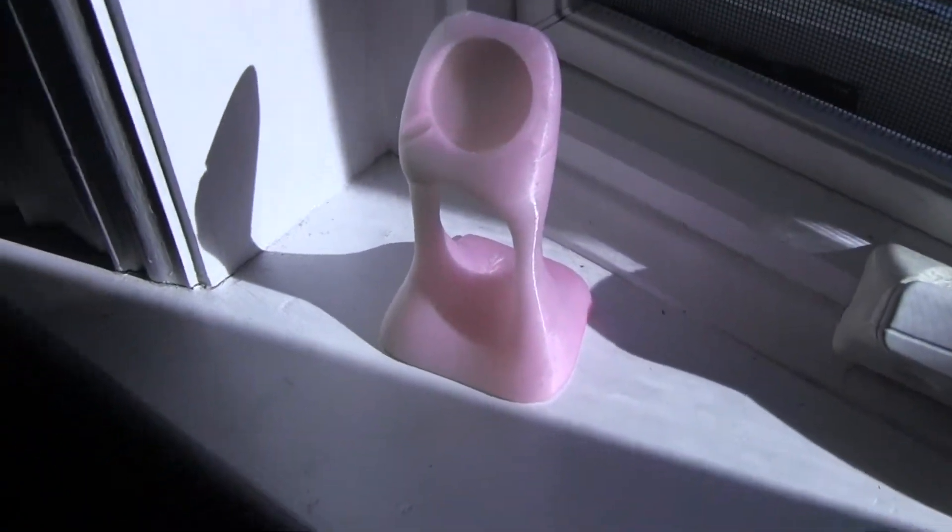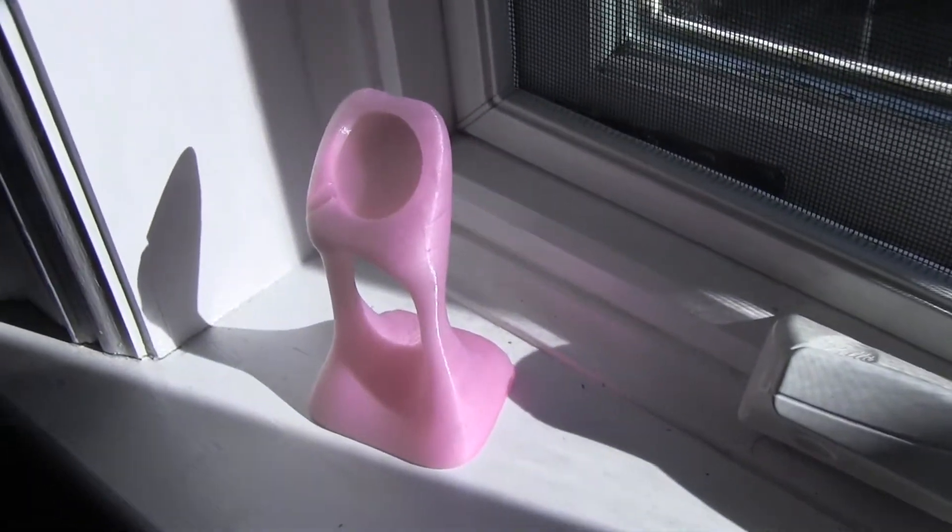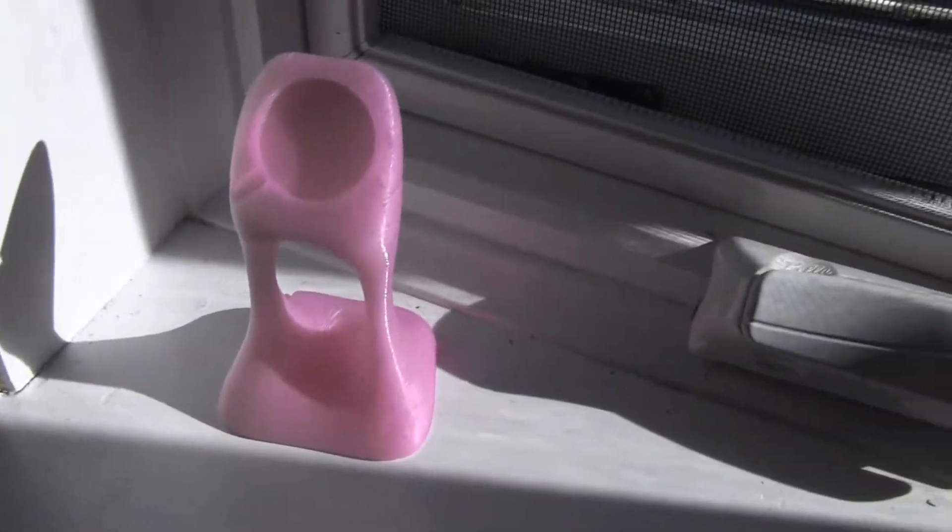So let me put one of these actually in the sun so you can see it better. This was like a little holder for an Apple Watch. You can see it's kind of pink. It usually starts off white, and then it becomes this pinkish-purplish color.